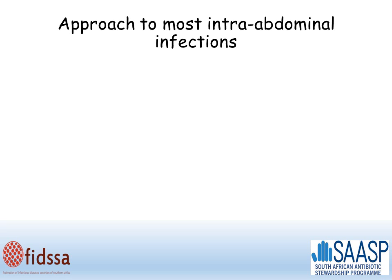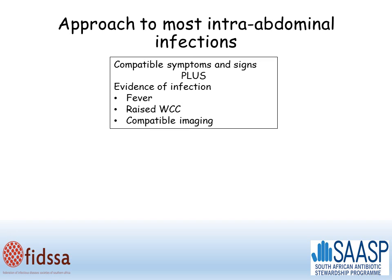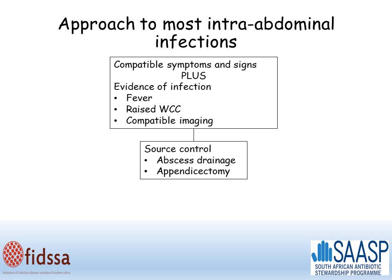Here is an approach to most intra-abdominal infections. First, you need to make the diagnosis, which means having compatible symptoms and signs — usually abdominal pain — plus evidence of infection such as fever, raised white count, or inflammatory markers, and compatible imaging. If infection is likely, it's very important to achieve source control. So if there is an abscess, it must be drained, and if there's a specific bowel pathology such as appendicitis, then appendicectomy must be performed.